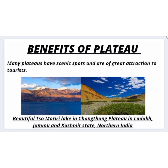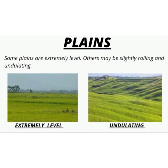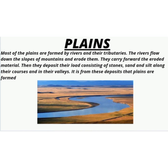Now we will study about plains. Plains are large stretches of flat land. They are generally not more than 200 meters above mean sea level. Some plains are extremely level and others may be slightly rolling and undulating. Most of the plains are formed by rivers and their tributaries. The rivers flow down the slopes of mountains and erode them, carrying forward the eroded material. They deposit their load consisting of stones, sand and silt along their courses and in their valleys — it is from this deposit that plains are formed.